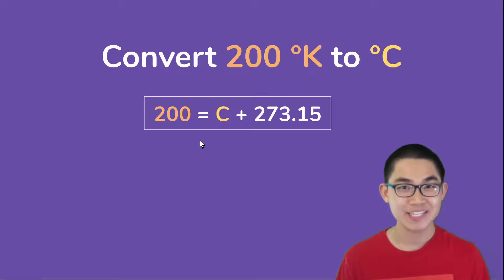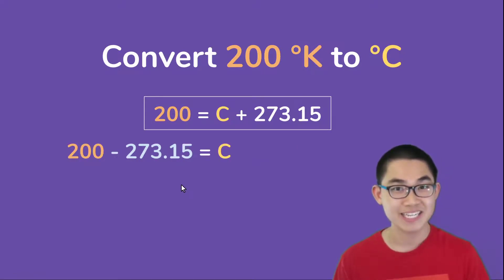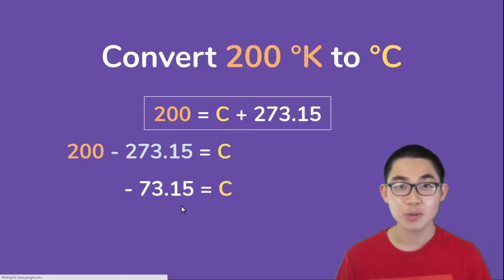So what we can do is subtract both sides of the equation by 273.15. On the right side, 273.15 minus itself is going to be zero, so these two cancel out. And then on the left side, we have 200 minus 273.15, which is equal to negative 73.15.